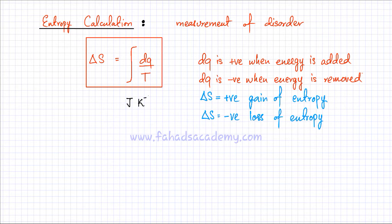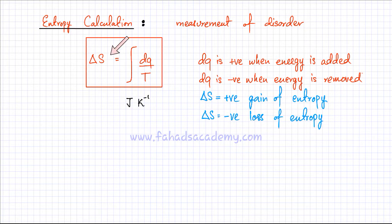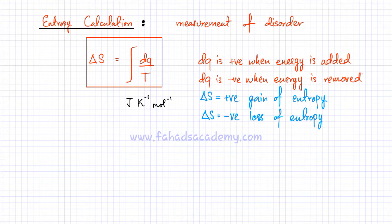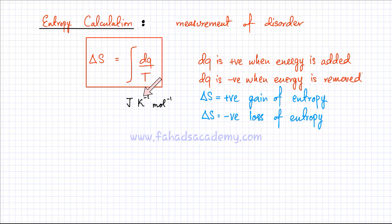If we're talking about standard entropy, that means calculating entropy change under standard conditions: room temperature of 25 degrees centigrade, 1 atmosphere pressure, and if there's a solution, a concentration of 1 mole per dm³. When measurements are carried out under standard conditions, the additional unit used is per mole, since standard entropy changes are for 1 mole. So the unit for standard entropy is joules per Kelvin per mole.